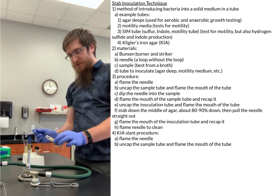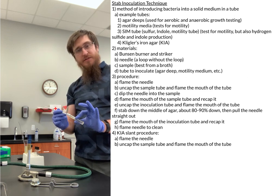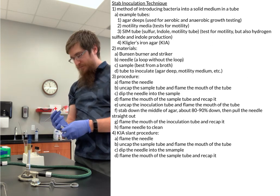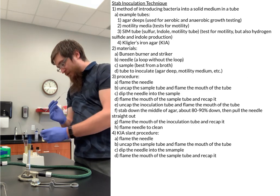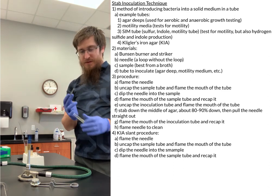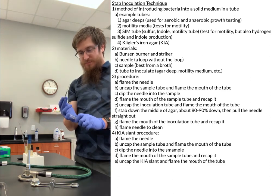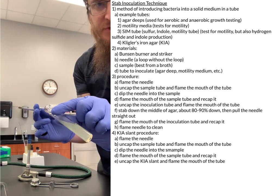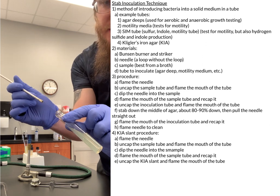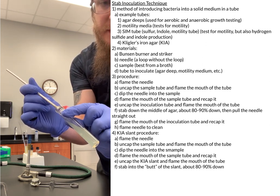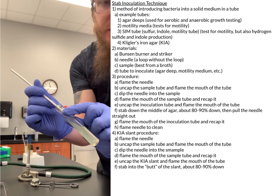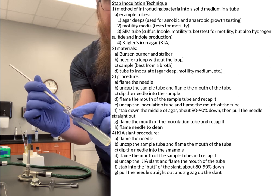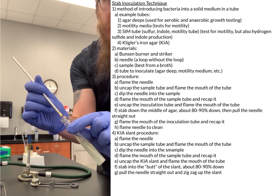Uncap the sample tube, flame the mouth of it, dip the needle inside of the broth, flame the mouth of it again, and recap it. Now with our KIA slant, we're going to uncap it, flame the mouth of the tube, and what I'm going to do is stab down inside of the butt of my slant — about 80% of the way down — then come up, and now I'm going to zigzag across the slant.